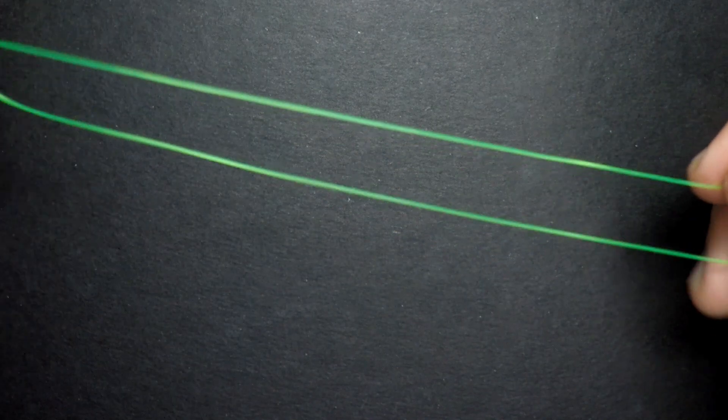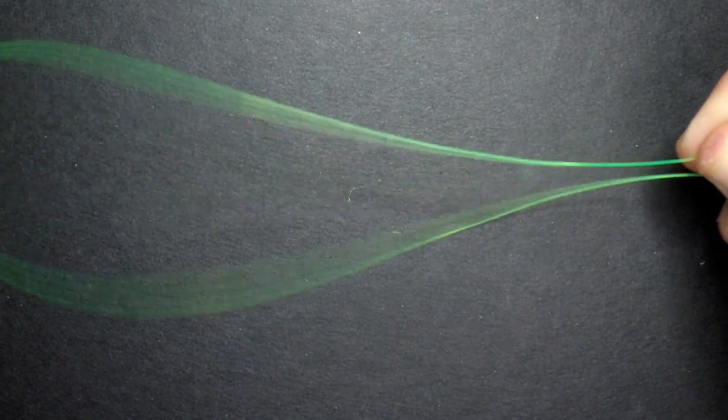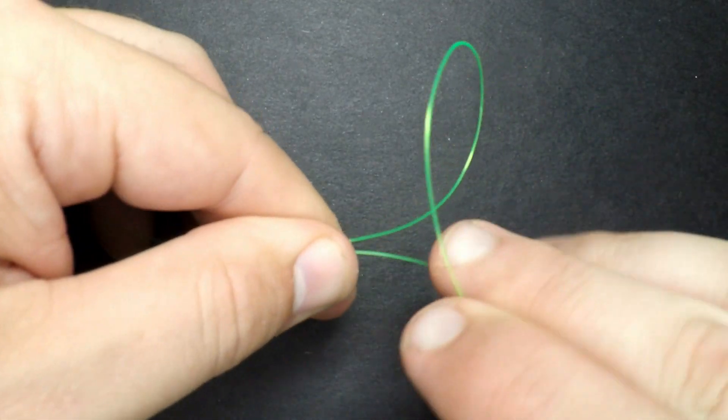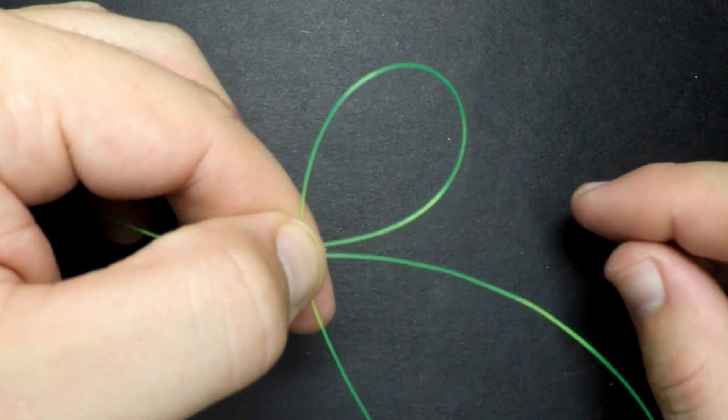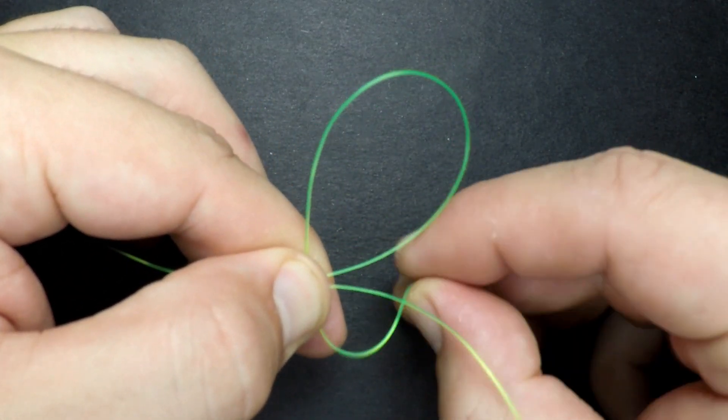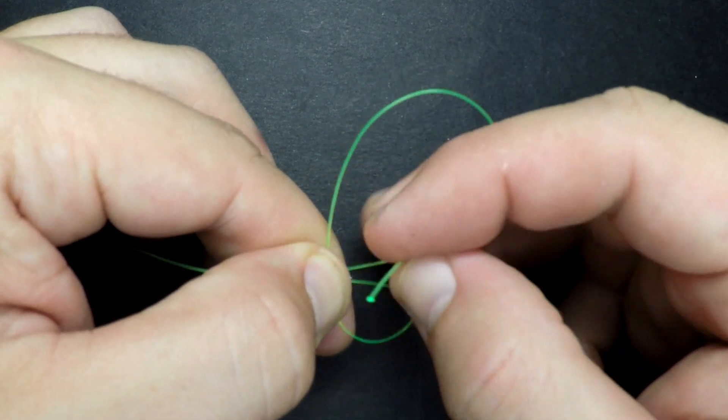To do that, you're going to thread your line through the eye of the hook, lay the tag in along the main line, then with the tag end, create a loop allowing it to cross the main line. Now with the tag end, we're going to take it around the main line, threading it through this loop.